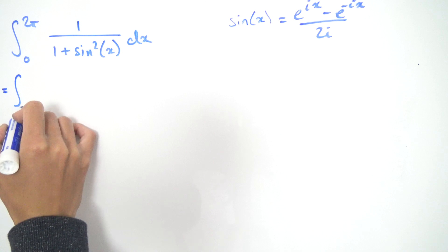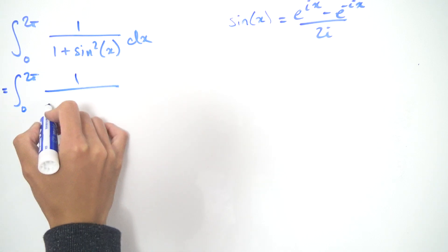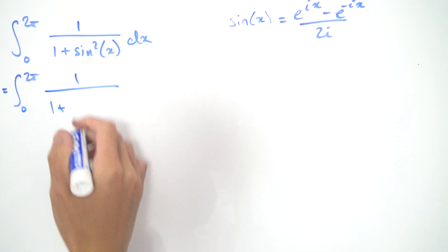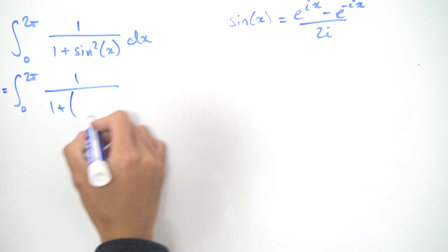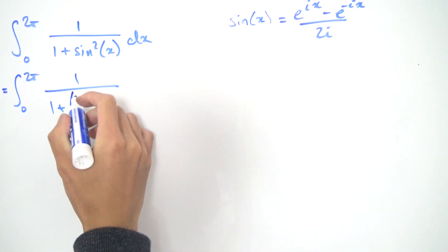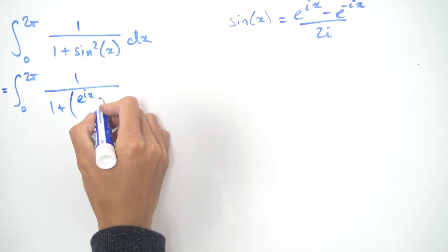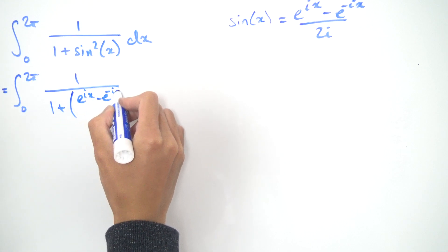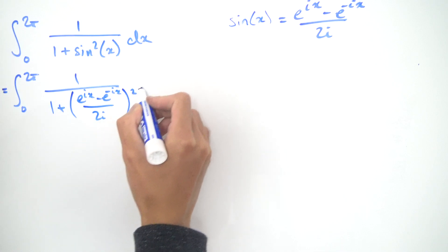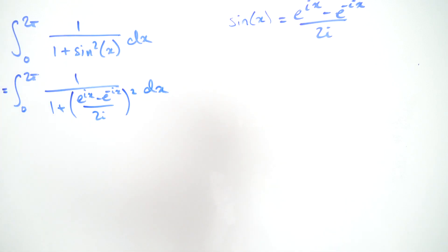That's now the integral from 0 to 2π of 1 over 1 plus, now we have the sine squared of x, and that's basically this whole fraction but squared. So e to the ix minus e to the minus ix divided by 2i, but the whole thing's squared, and we integrate with respect to x.